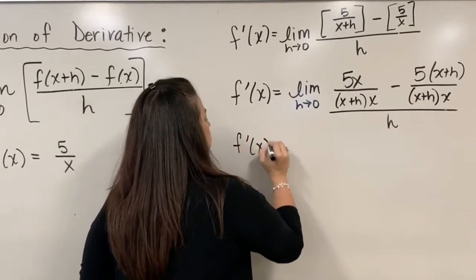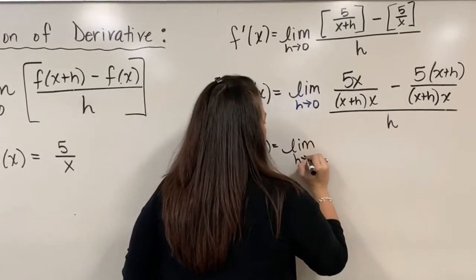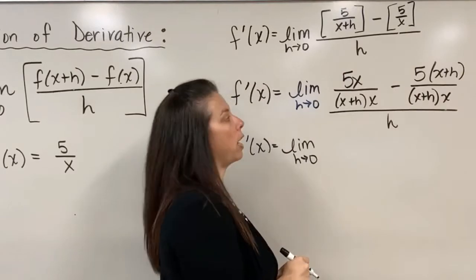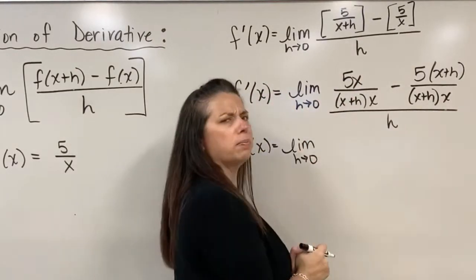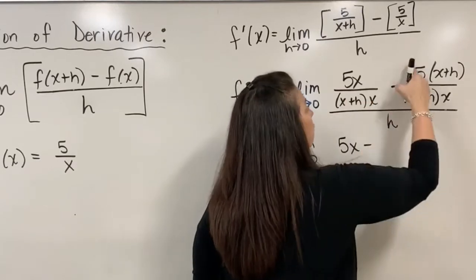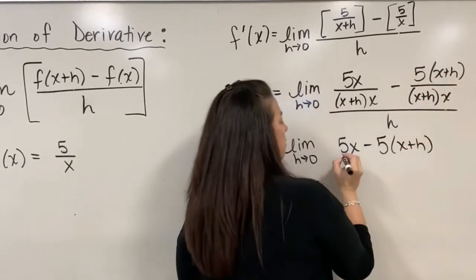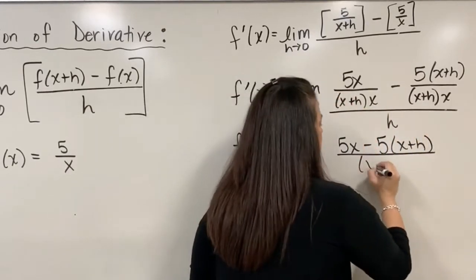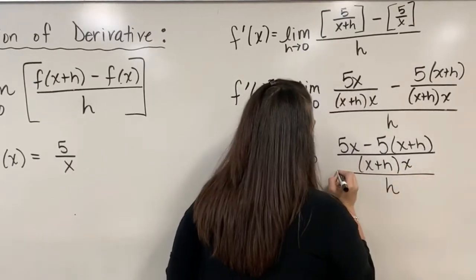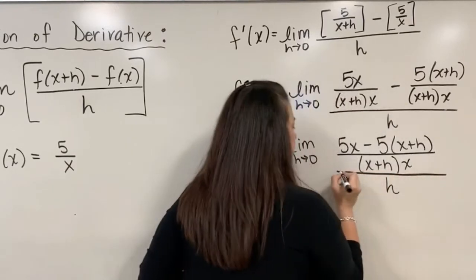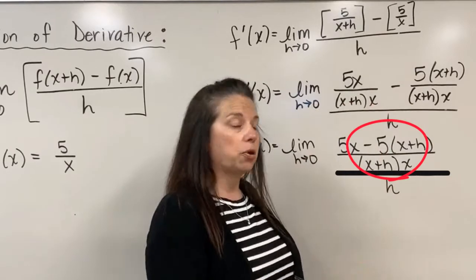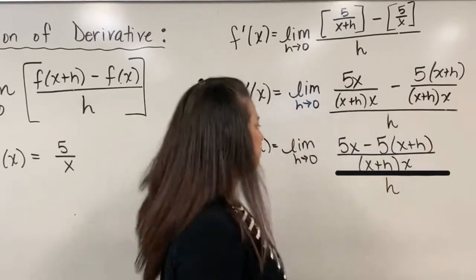That's my next step. f prime of x is equal to the limit as h approaches 0. And here, my numerator, since I have the same denominator here of those two fractions in the top numerator, let's go ahead and write that as one big fraction. So I have now 5x, this numerator here, subtract 5 times x plus h. And of course, all of that is still over its denominator of x plus h times x. And of course, all of that is still over our big denominator here of h. And I'm going to thicken this line here so that you recognize that in this top numerator, that is one giant fraction in the numerator and just a little h in the denominator.